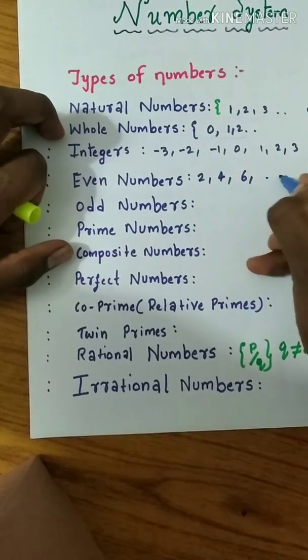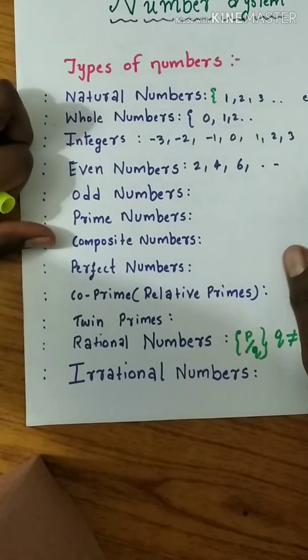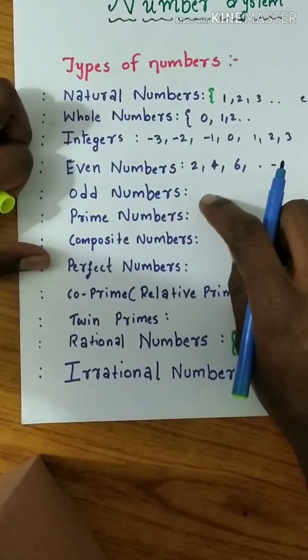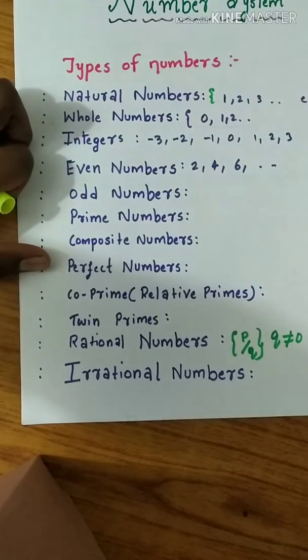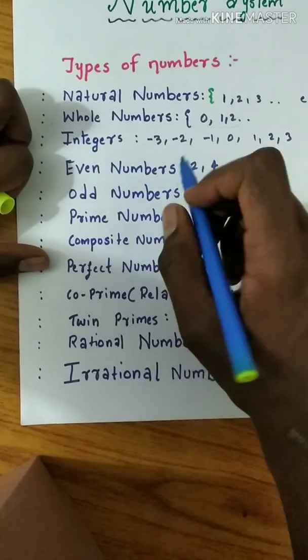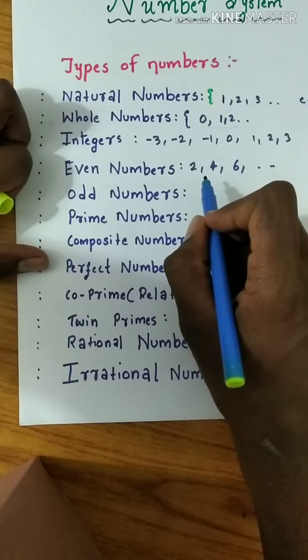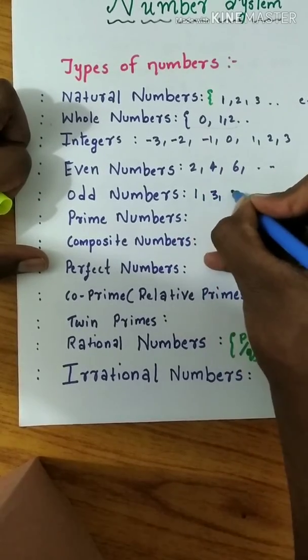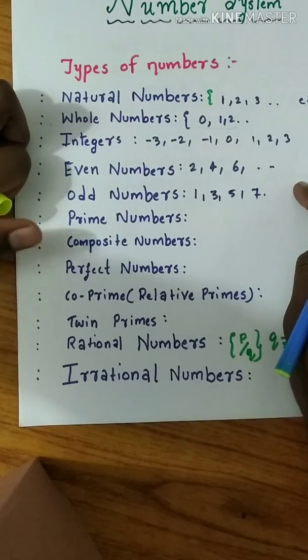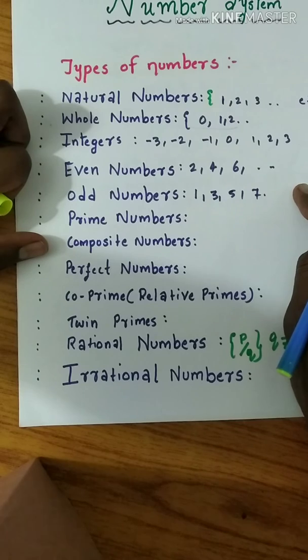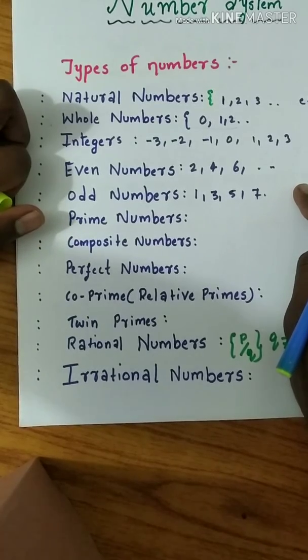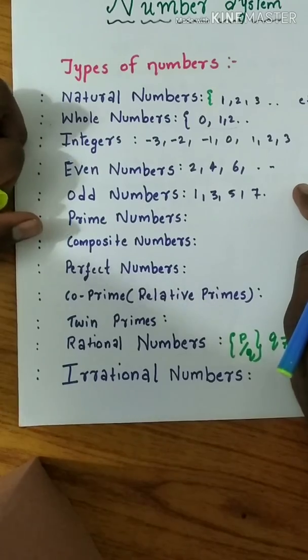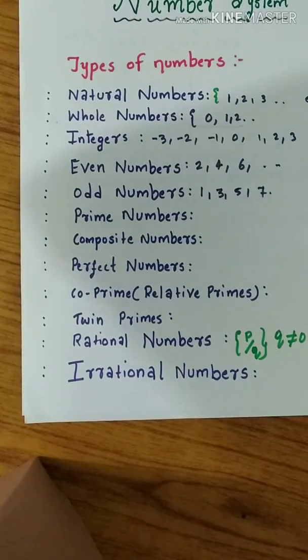Odd numbers - opposite of even numbers, not a multiple of 2. Examples: 1, 3, 5, 7, etc. Prime numbers - a counting number is called a prime number if it has exactly two factors: itself and one.